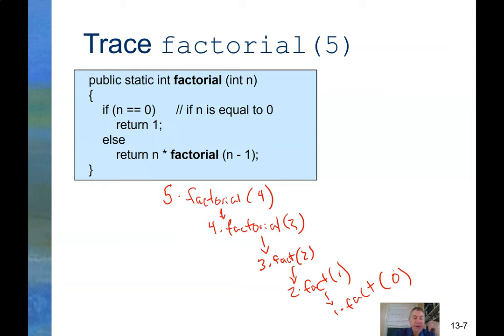So this now becomes... Give me my little dots down here. I want to change the color. So this now becomes 1. And 1 times 1 is 1. So this is 1. So that gives you 2. This is 2. So 3 times factorial of 2 is 6. Factorial of 3 is 6. So 4 times factorial of 3 is 12. No. 4 times 6 is 24. And 5 times 24 gives you 120.